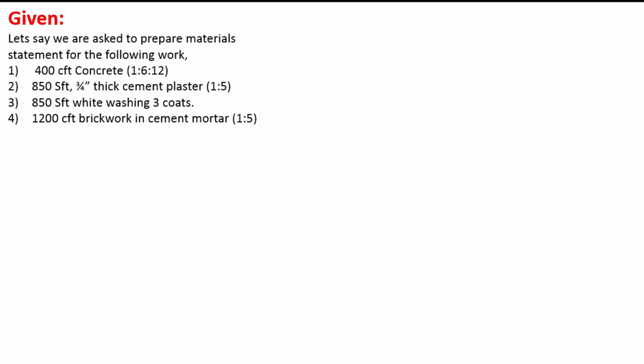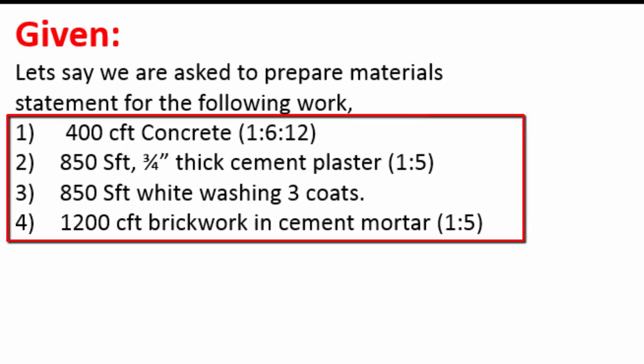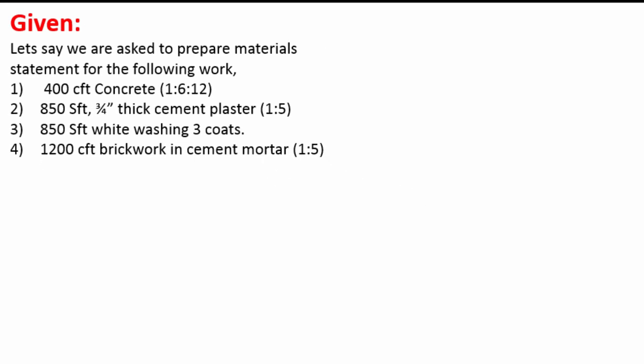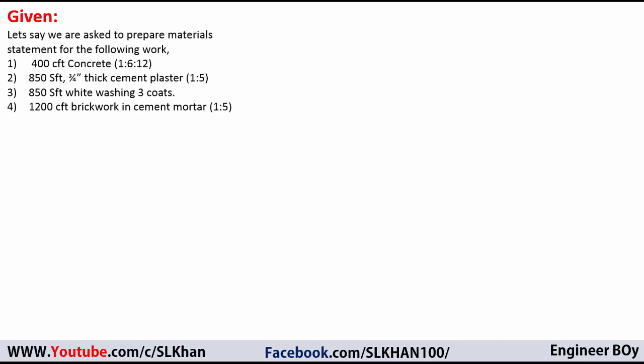We have four types of estimation works or activities. We have 400 CFT concrete work at a 1:6:12 ratio, and 850 SFT which is 3/4 inch thick cement plaster at a 1:5 ratio, and 850 SFT whitewashing with three coats, and lastly 1200 CFT brickwork with cement mortar. We're going to prepare the material statement for these four types of estimation works.